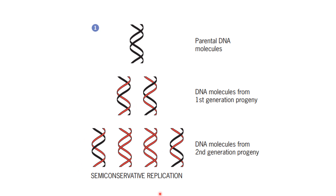In the second round of replication, we obtain four DNA molecules. Out of these, two DNA molecules consist of half old material and half new material, while two DNA molecules consist of entirely new material. So, semi-conservative replication means half of the DNA molecule is conserved while half is new.